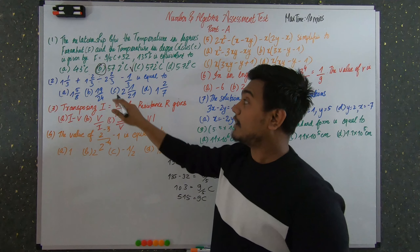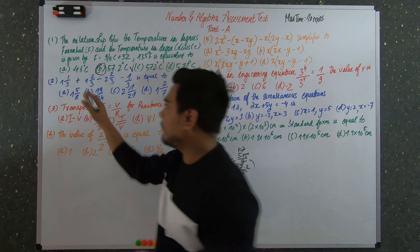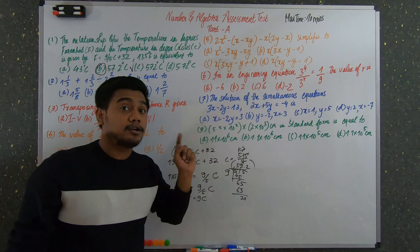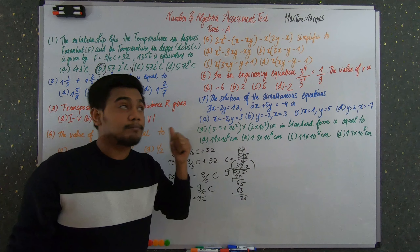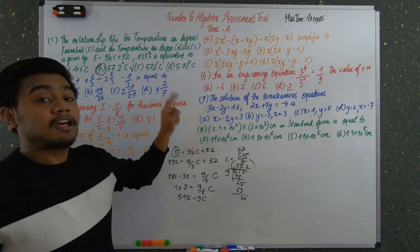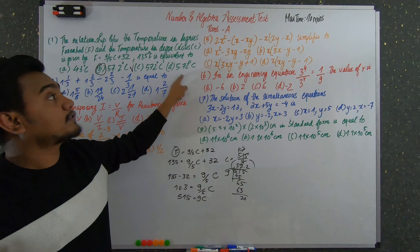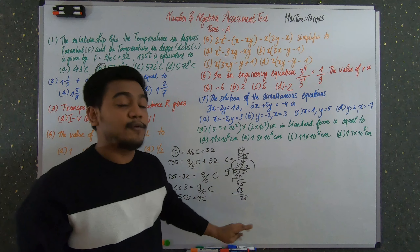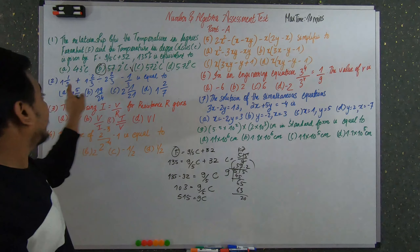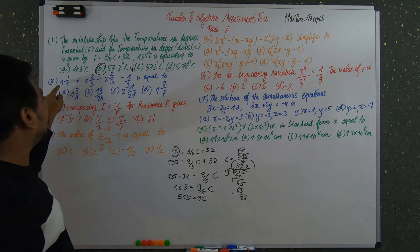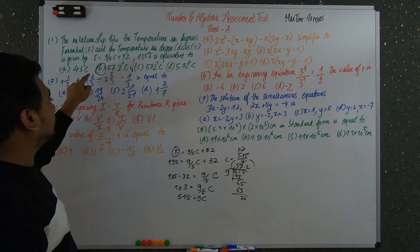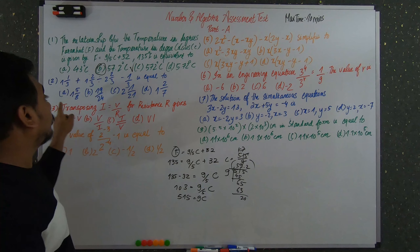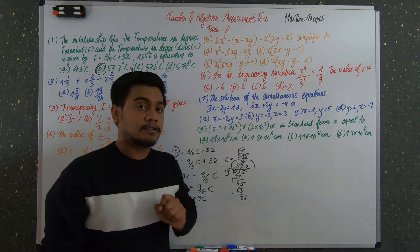Now the second question is a fraction problem. If you find it difficult, please check the topics related to simple equations. The problem is: (1⅓ + 1⅔) ÷ (2⅔ − ⅓). We need to solve this expression.